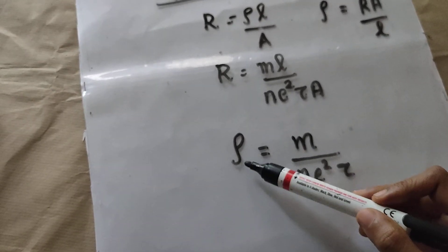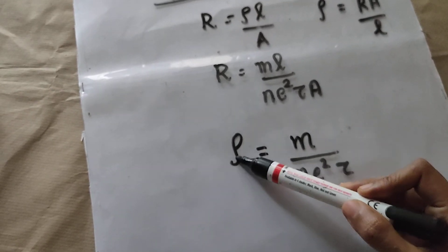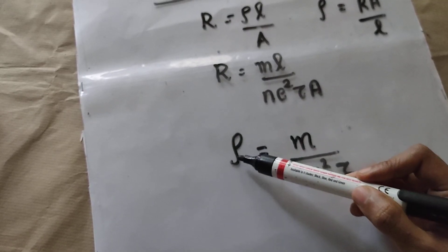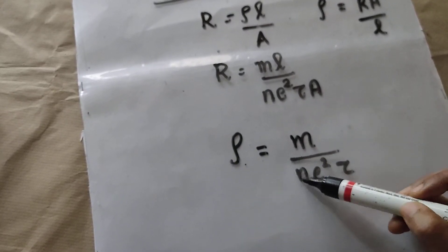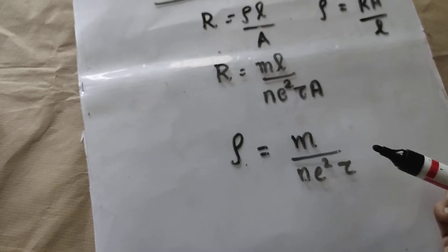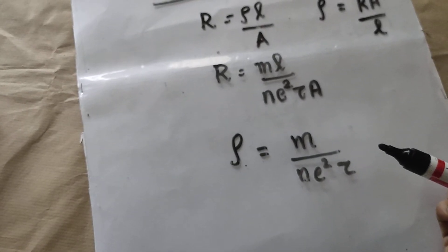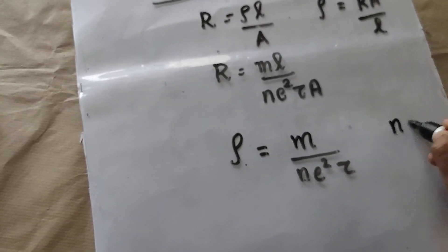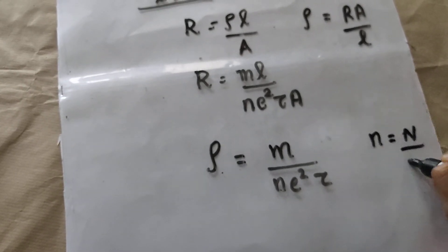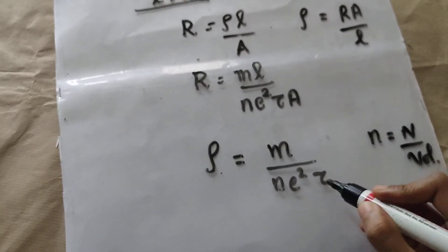This is the equation for resistivity in terms of N, where N is the electron density — that is, the total number of electrons per unit volume — and tau, which is the relaxation time.